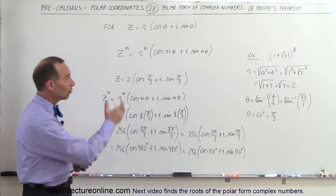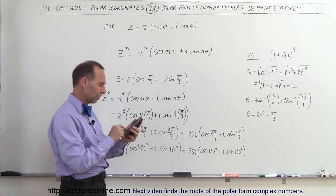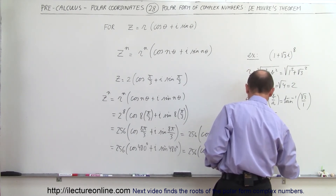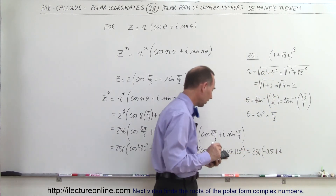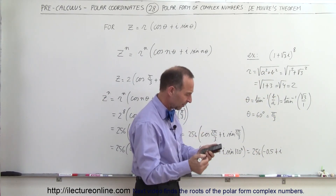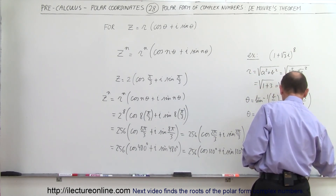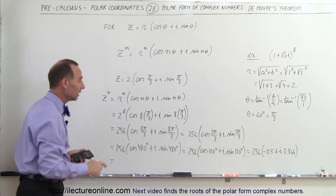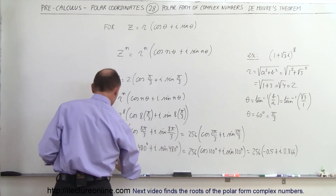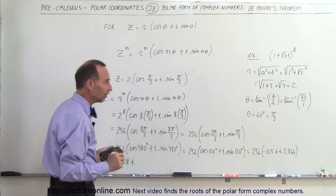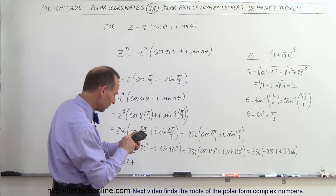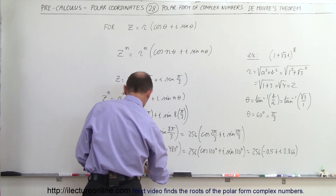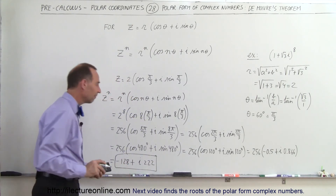Now let's convert that into a complex number. The cosine of 120 degrees equals minus 0.5, so this is 256 times minus 0.5. The sine of 120 degrees is 0.866. So in the form a plus ib: 256 times negative 0.5 gives minus 128, and 0.866 times 256 gives approximately 222. So the result is minus 128 plus 222i.